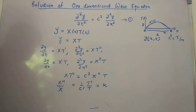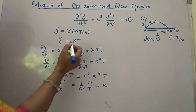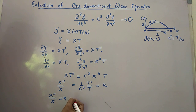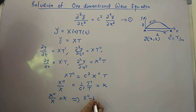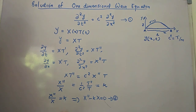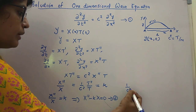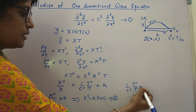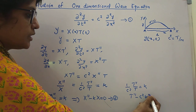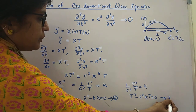So we take the ratio equal to K. We will solve for X and T separately. This gives us: X''/X = K, which implies X'' - KX = 0 (equation 2). Similarly, (1/c²)·T''/T = K, which implies T'' - c²KT = 0 (equation 3).